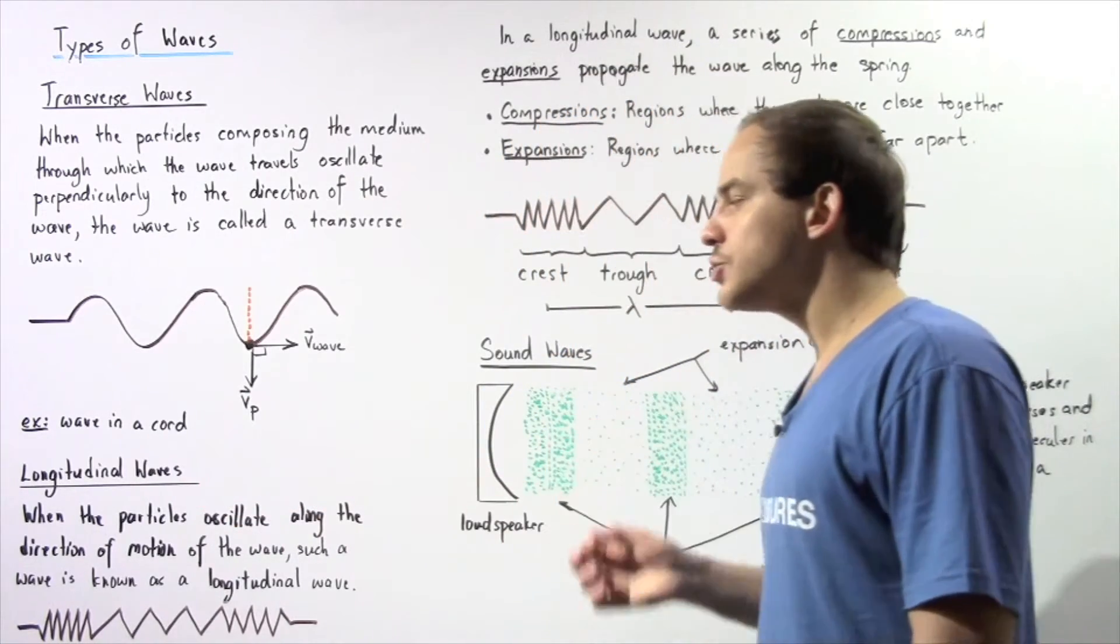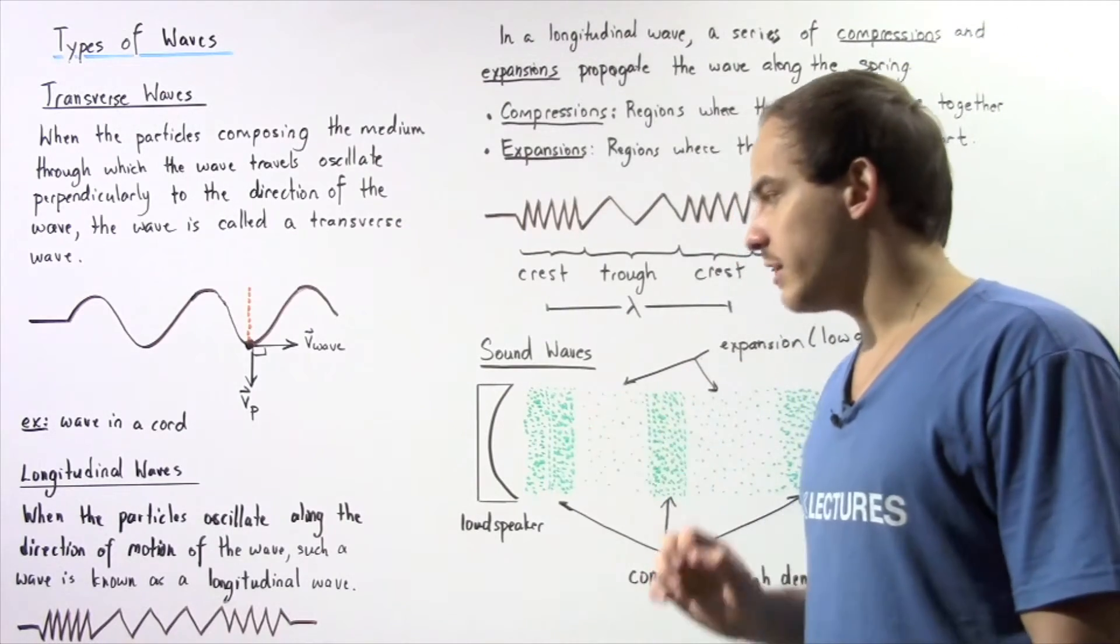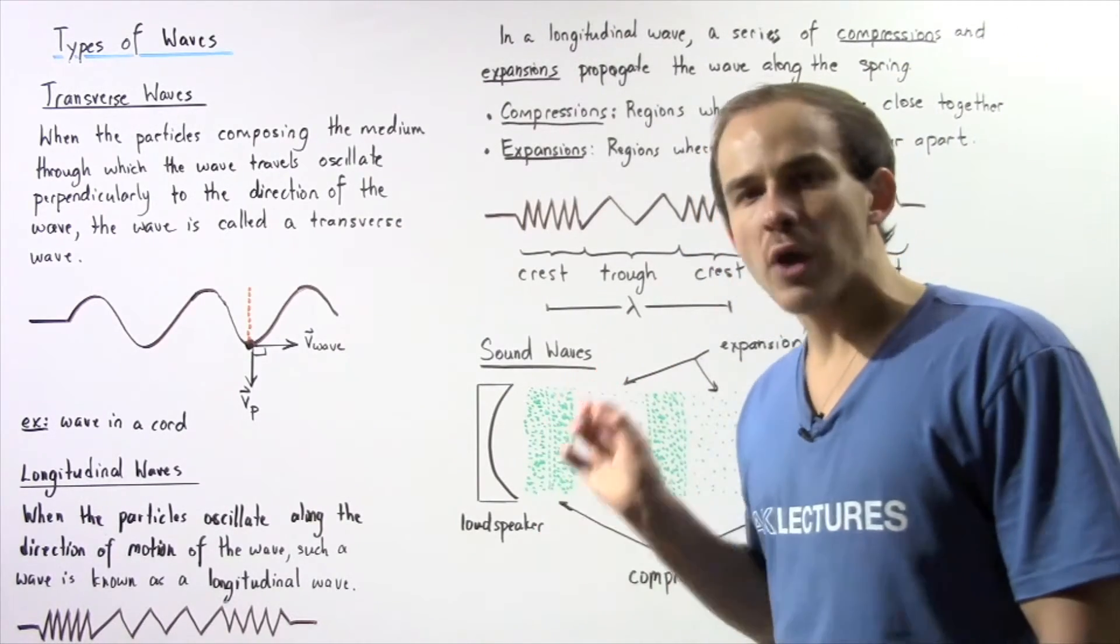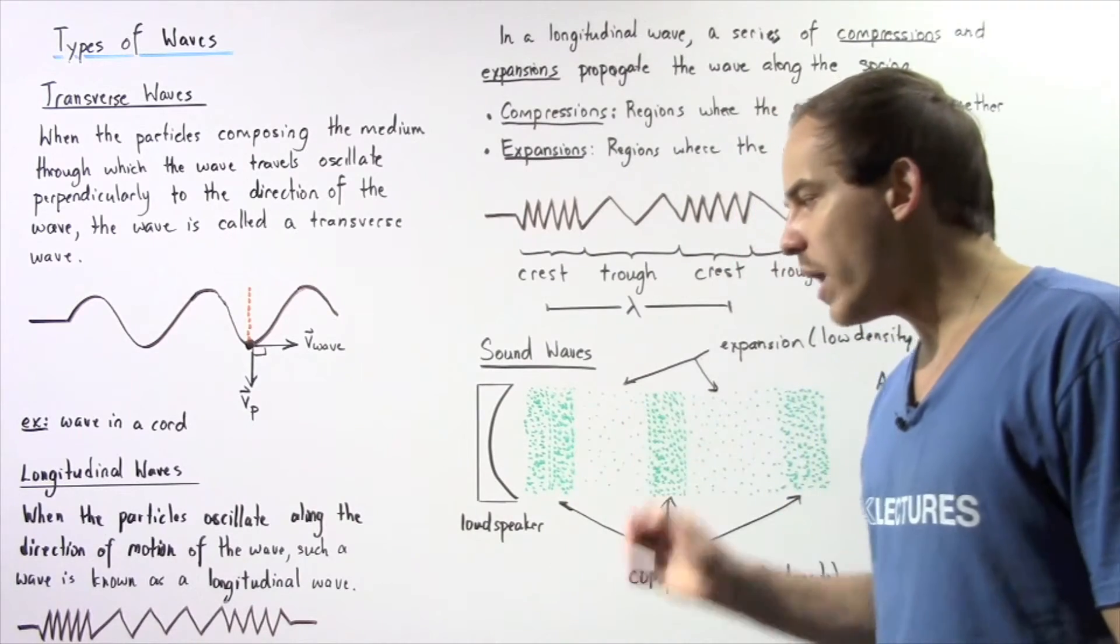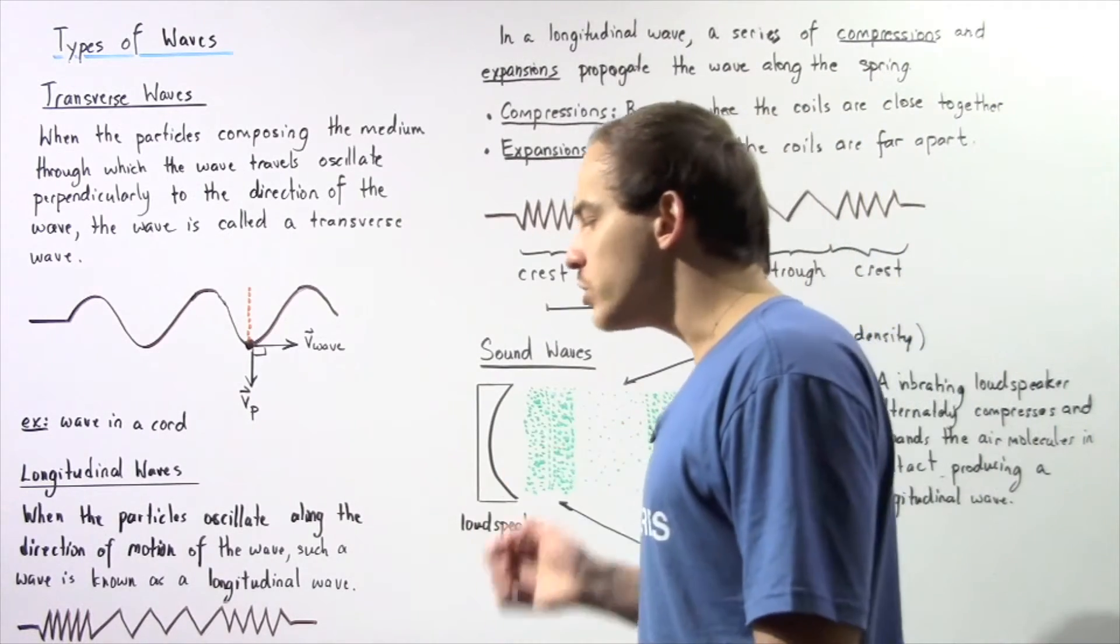Now let's define what a longitudinal wave is. When the particles oscillate along the same direction of motion of the wave, such a wave is known as a longitudinal wave.